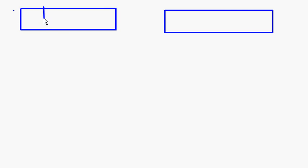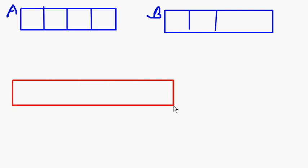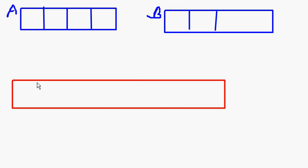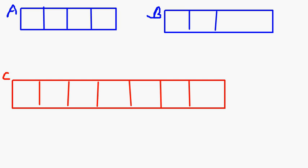I'm going to take two arrays here. This is the first array with four elements — let's call it array A — and this is the second array with three elements — array B. I'll also have a third array C, which will be the merged array. The size of C is the size of A plus the size of B: four plus three equals seven, so C has seven elements.